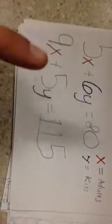Our equations are 5X plus 6Y equals 80, and the second one is 9X plus 5Y equals 115. For the representation, X is adults and Y is kids. On the graph, the intersection is at 10, 5.